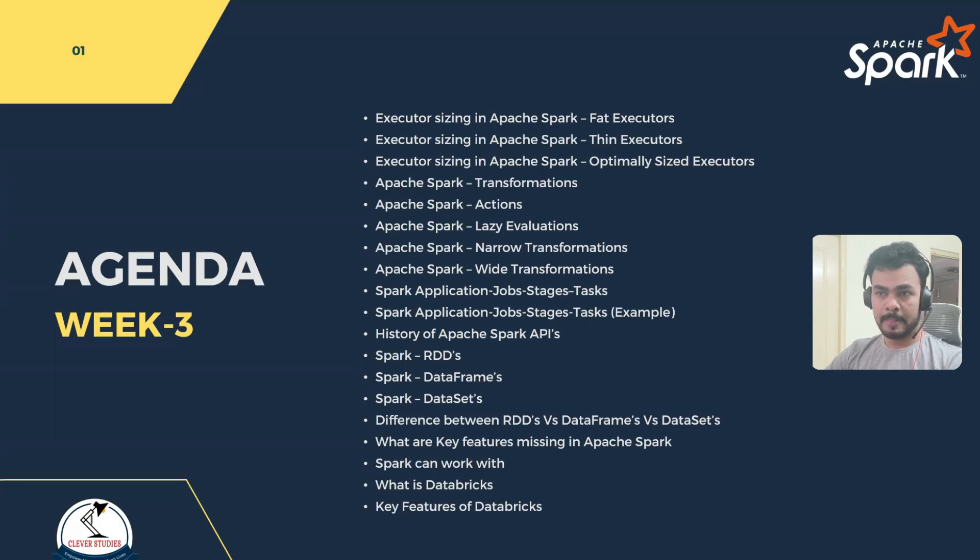We'll go with the fat executors. So we learned in our previous session how we have to arrive at the number of executors, number of cores, and the memory which is required for our executor. With the continuation of the topic, we are going to cover three more topics: fat, thin, and optimally sized executors.